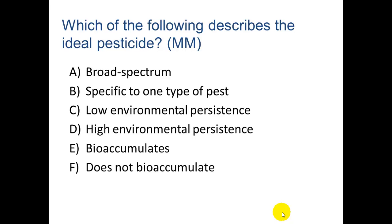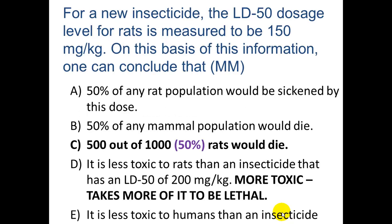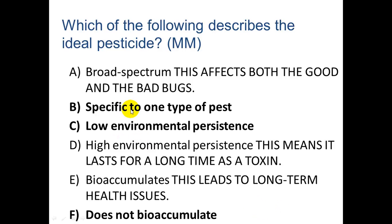Which describes the ideal pesticide? We would want a pesticide that is very specific to one type of pest — not killing off the good and the bad bugs. Broad spectrum means it kills a greater variety of bugs, which is not ideal, because you might be killing your ladybugs at the same time as your aphids. You want it to have low environmental persistence — meaning it will break down quickly rather than sticking around for decades and bioaccumulating into organisms. High environmental persistence means it lasts a long time — we don't want that. Bioaccumulation leads to long-term health issues. The ideal pesticide does not bioaccumulate, has low environmental persistence, and is specific to one type or a small variety of pests.